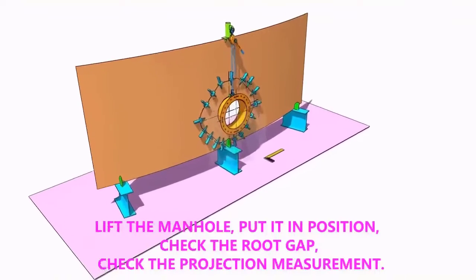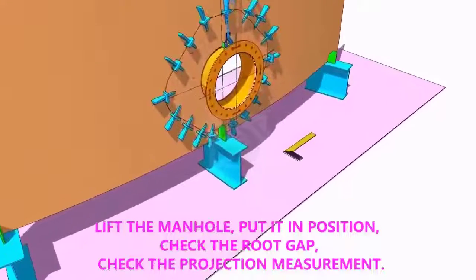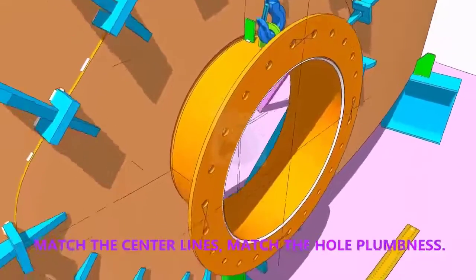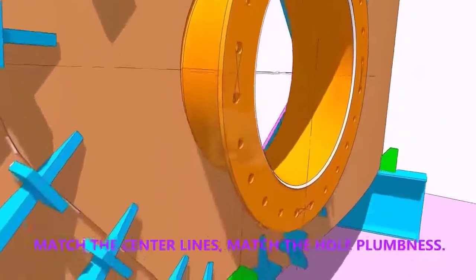Put the manhole in its position. Correct the plumbness, correct the projection of the manhole, correct the gap, and check again the plumbness.